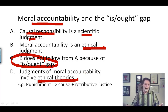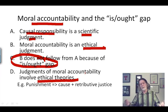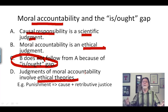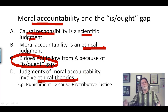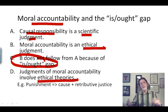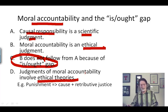For example, when you punish somebody justly, you apply a theory of retributive justice and look for the cause. You find the person is the cause, their guilty mind led to the outcome, and you apply retributive justice.